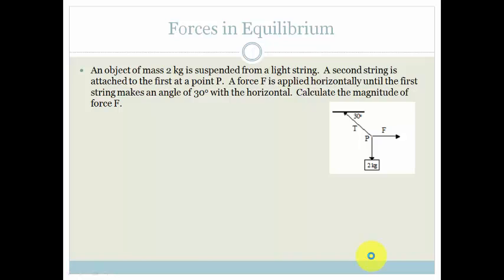So let's look at this example. It says an object of mass 2 kilograms is suspended from a light string. A second string is attached to the first at point P. The force F is applied horizontally, and the string makes an angle of 30 degrees with the horizontal. Calculate the magnitude of the force F.